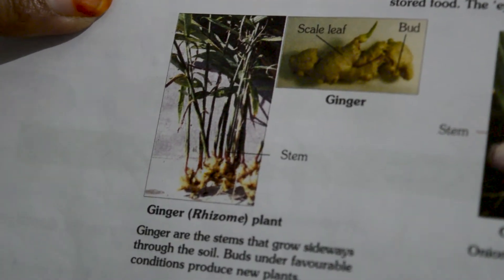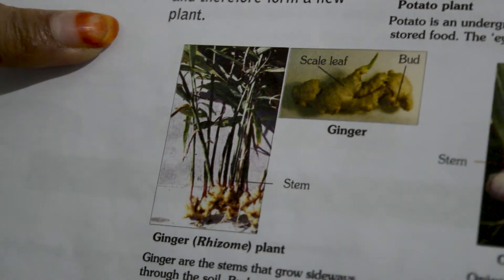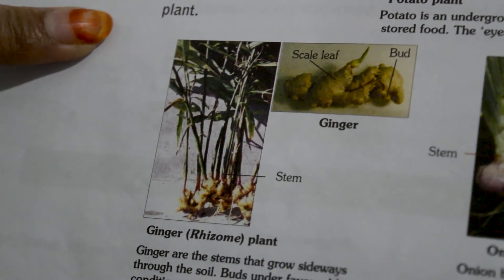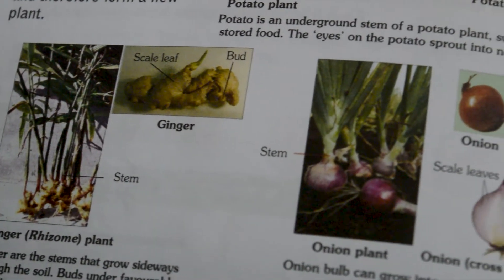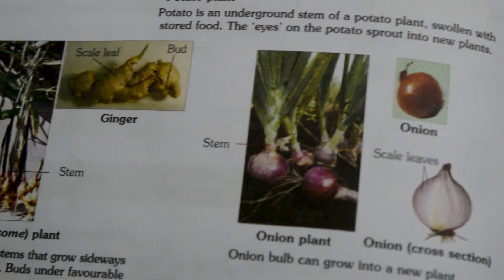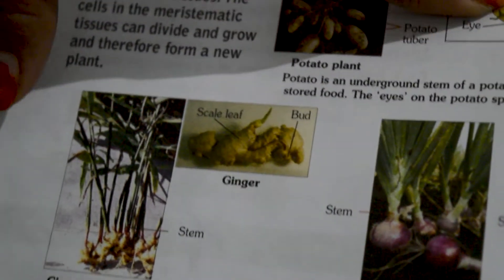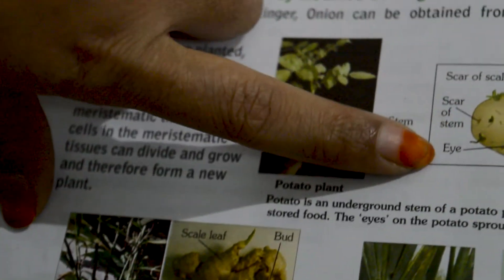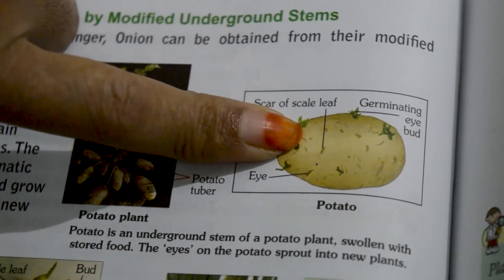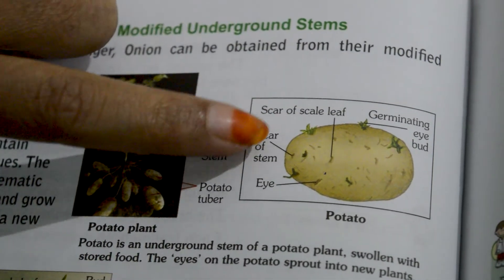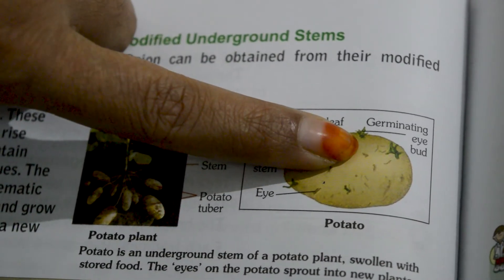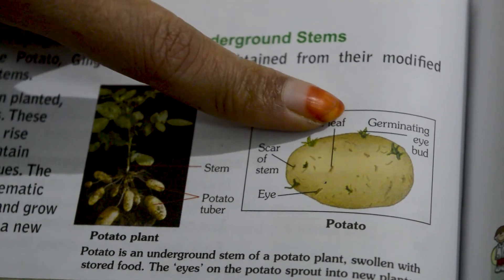The next is vegetative propagation by modified underground stems. For example, potato, ginger, and onion are modified underground stems with swollen stems because they store food. If you observe a potato, you can find the eyes of the potato. When they are placed in the soil, they start producing new buds.